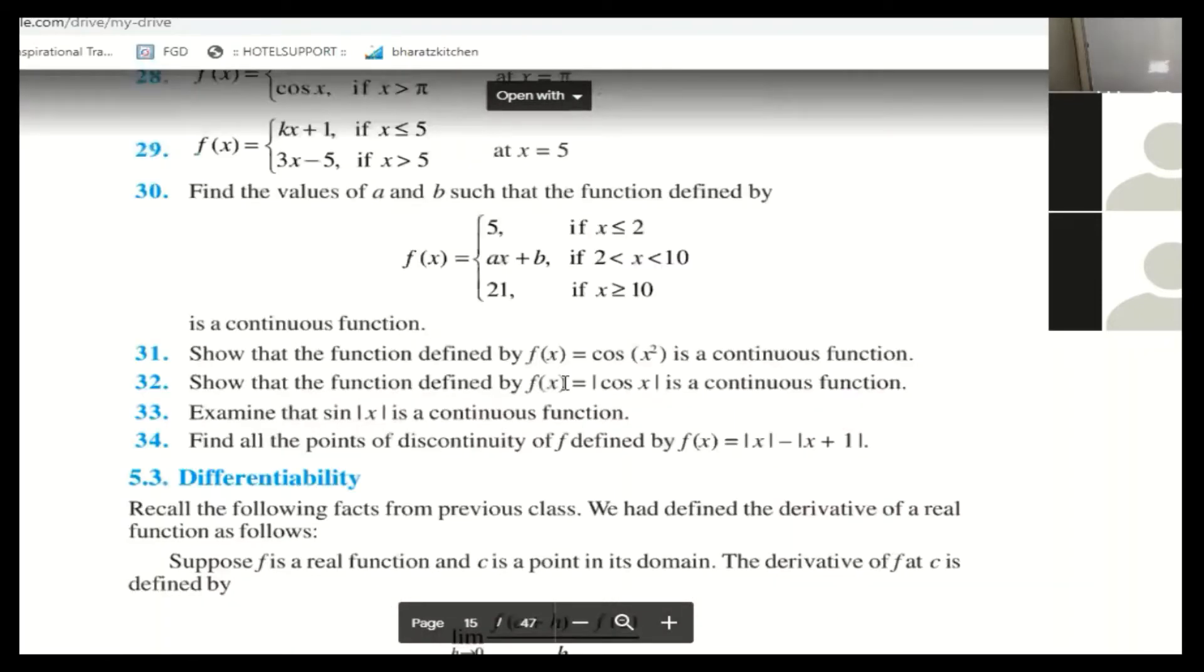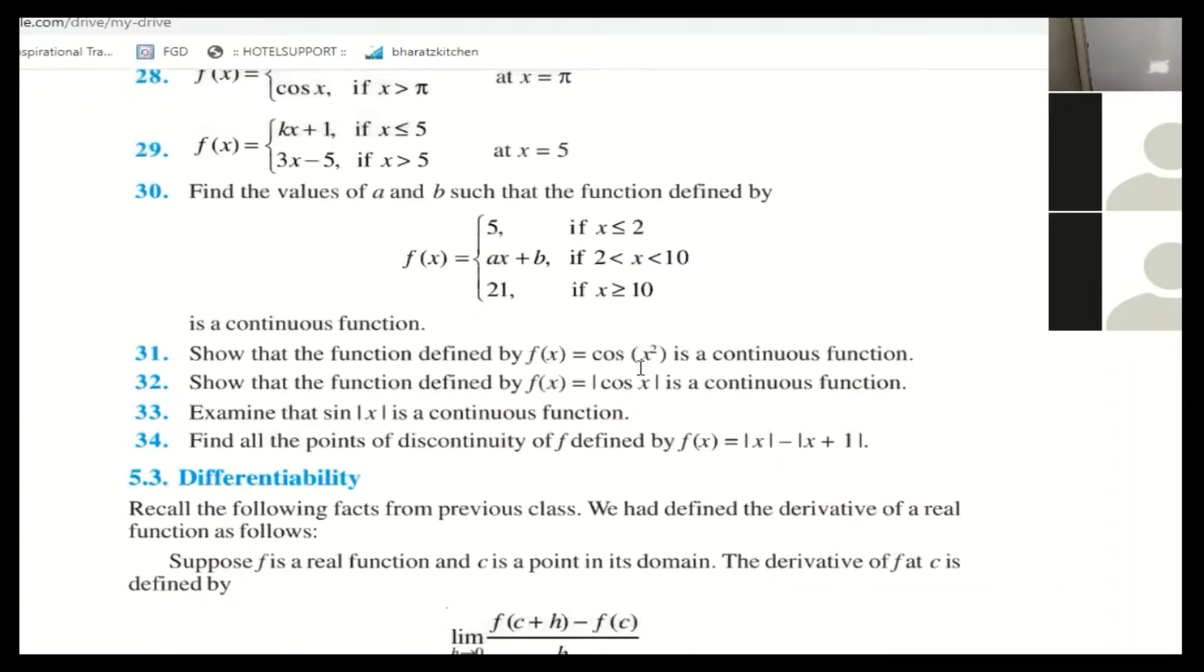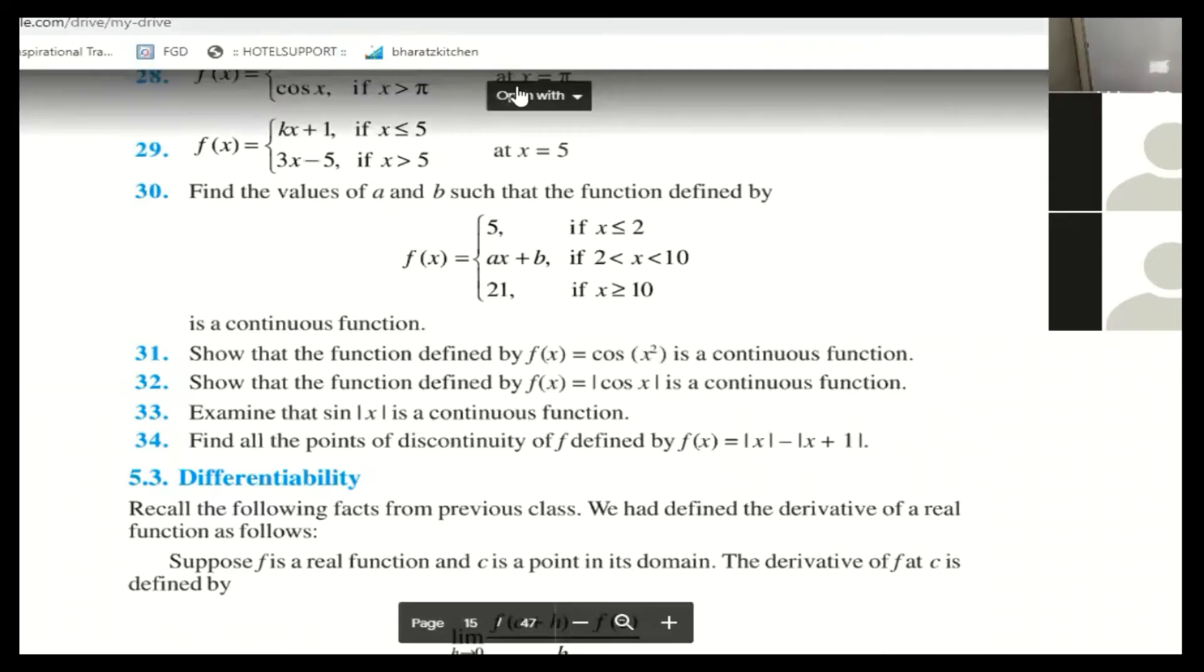Now, we are going to use this. I am telling you cosx. Cosx function is continuous? Yes, ma'am. X square function is a polynomial function. What will always happen? Continuous. Composition of two continuous functions is continuous.